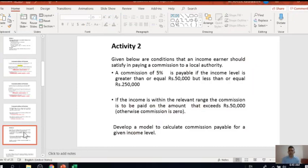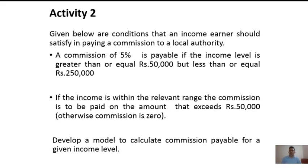Now let's try one more example — activity number two. Given below are conditions that an income earner should satisfy in paying commissions to a local authority. A commission of 5% is payable if the income level is greater than or equal to 50,000 but less than or equal to 250,000. If the income is within the relevant range, the commission is paid on the amount that exceeds 50,000; otherwise the commission is zero.